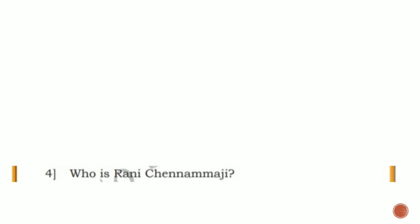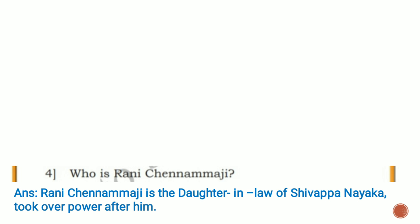Fourth question: who is Rani Channamaji? Answer: Rani Channamaji is the daughter-in-law of Shivappanayaka, who took over power after him.